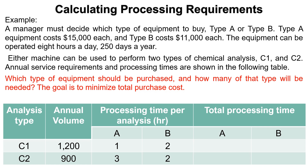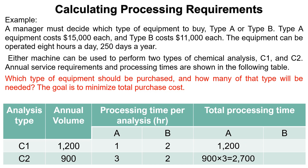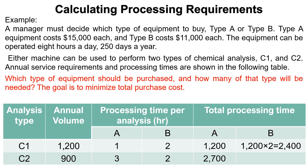To begin, calculate the total processing time of each analysis type needed by each type of equipment by multiplying the annual volume by the processing time per analysis. For analysis C1 with equipment A, the total processing time equals 1,200 times 1, equal to 1,200. For analysis C2 with equipment A, the total processing time equals 1,200 times 2, equal to 2,400.